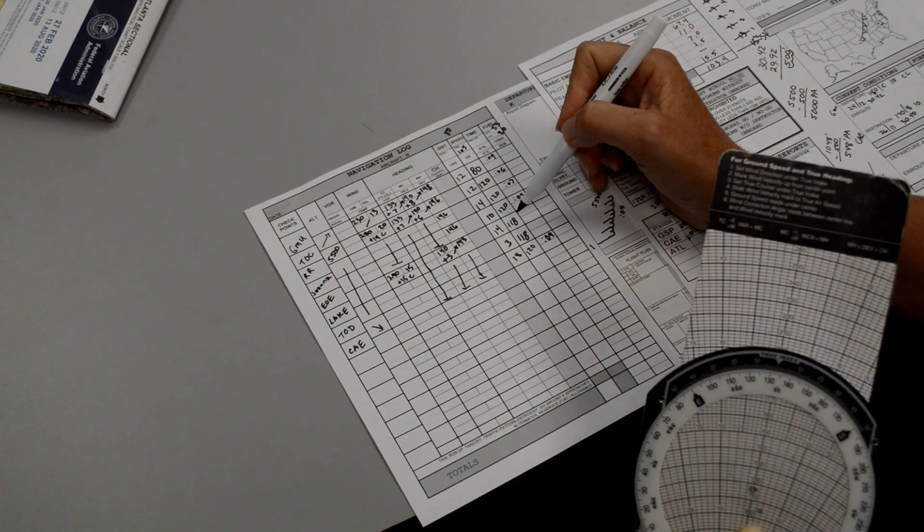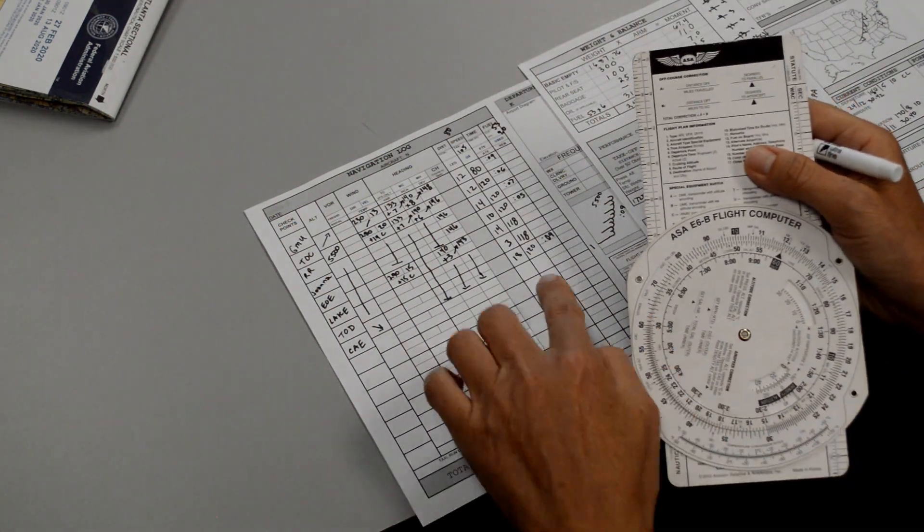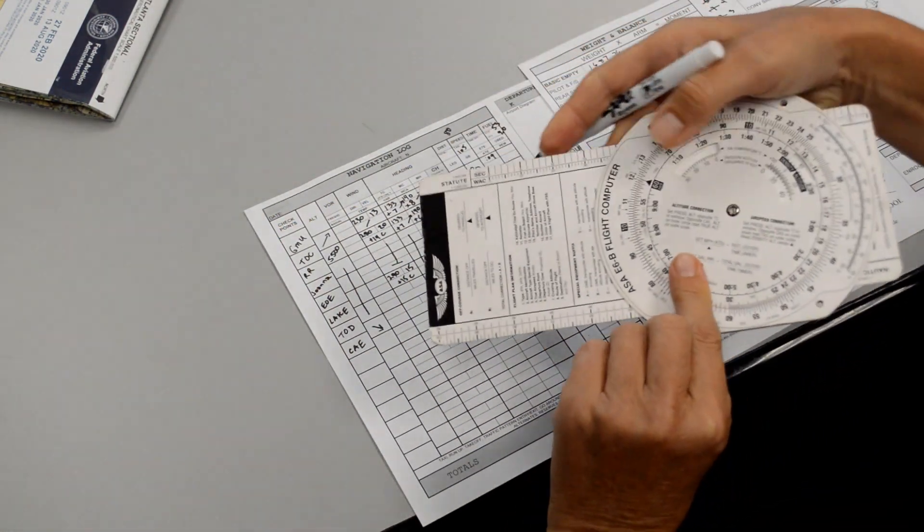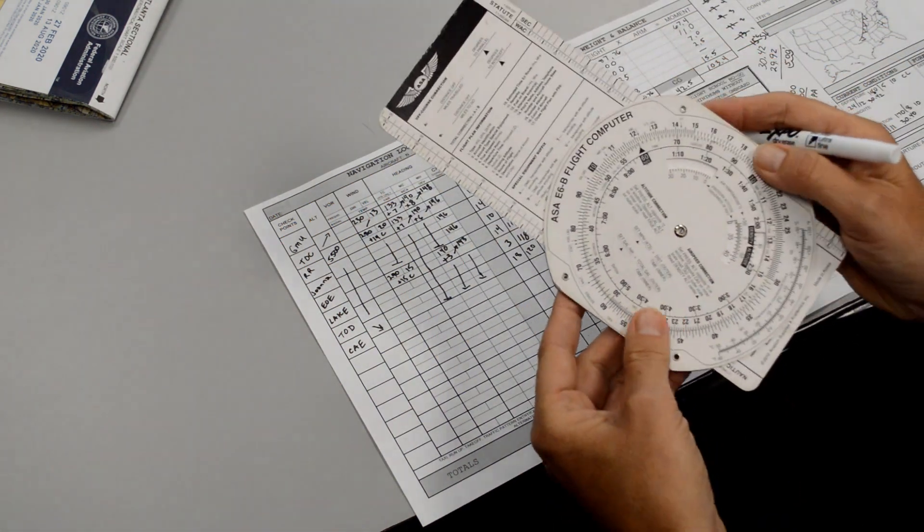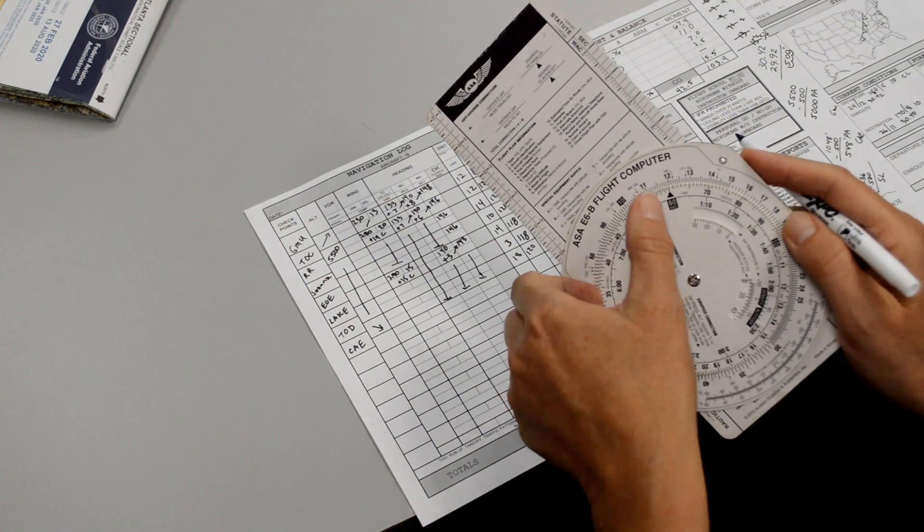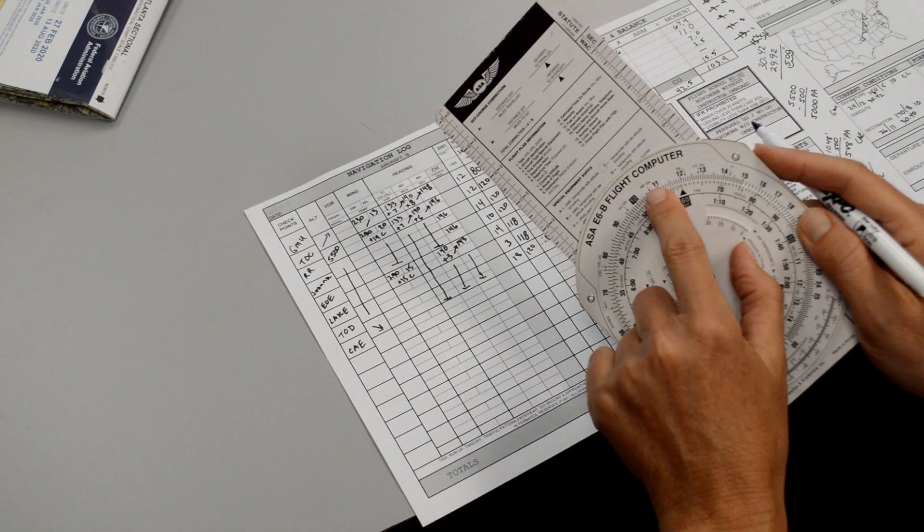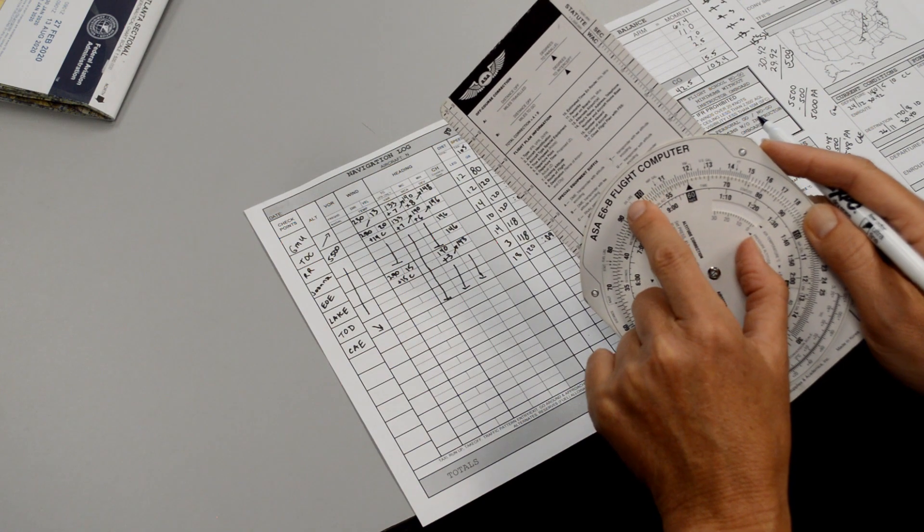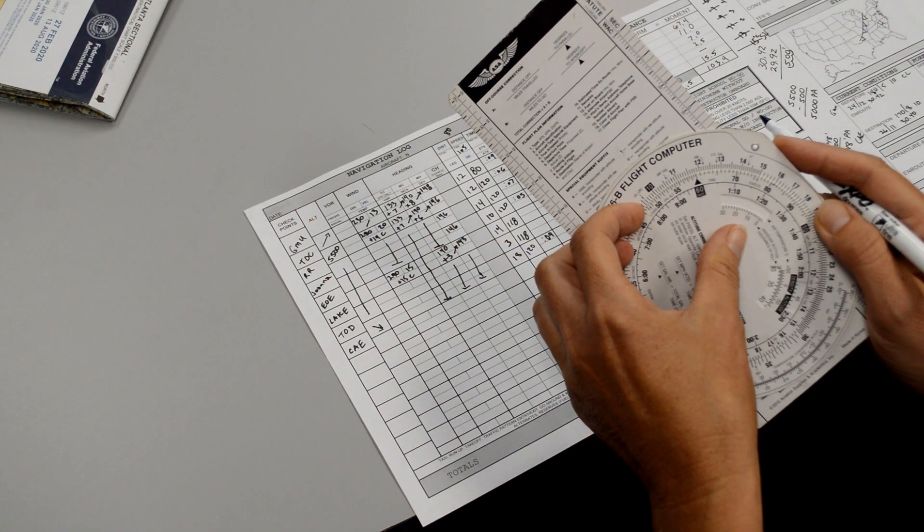So we have the distance and we have the speed. So we go to the calculator side of our E6B and it tells us to put the pointer on the speed. So put the pointer on 118. If that represented 120, then this would represent 110. That represents 100. So 118 should be right about there.